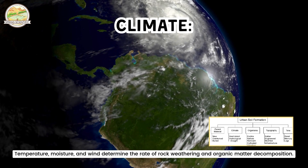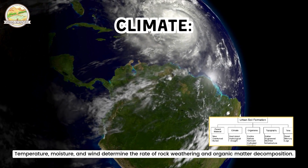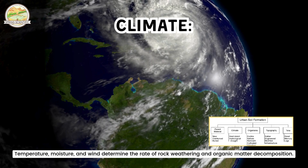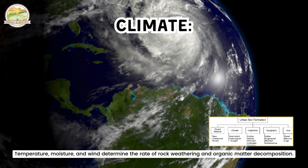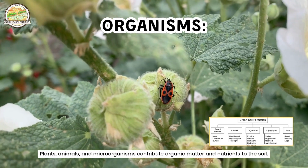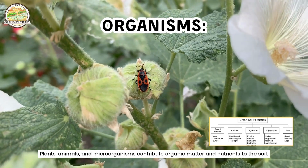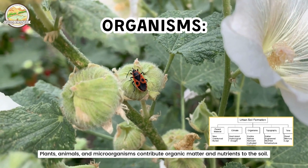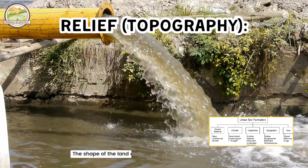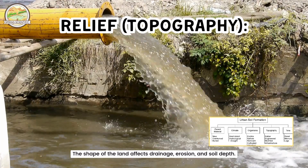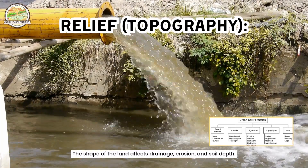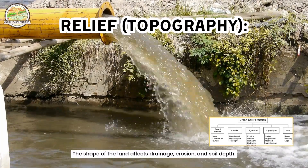Climate — temperature, moisture and wind — determines the rate of rock weathering and organic matter decomposition. Organisms, including plants, animals and microorganisms, contribute organic matter and nutrients to the soil. Relief, or topography, refers to how the shape of the land affects drainage, erosion and soil depth.